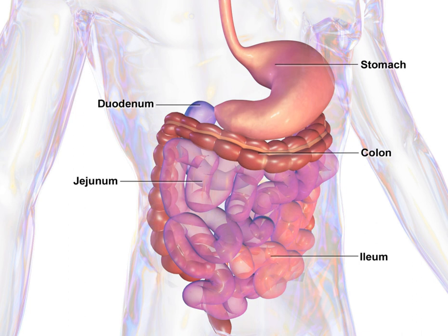The GI tract includes all structures between the mouth and the anus, forming a continuous passageway that includes the main organs of digestion, namely the stomach, small intestine, and large intestine. However, the complete human digestive system is made up of the gastrointestinal tract plus the accessory organs of digestion.